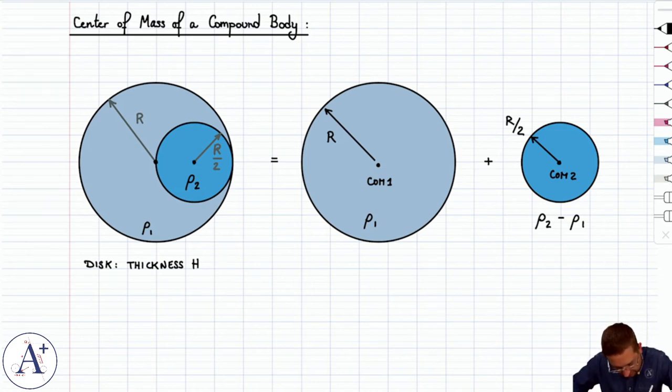Well, let's find the mass of this thing. This is a mass m1, and it's going to be mass density rho one times the volume of a disc.